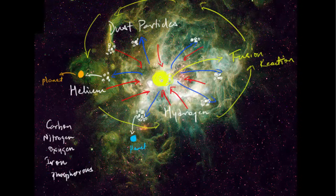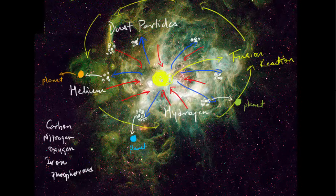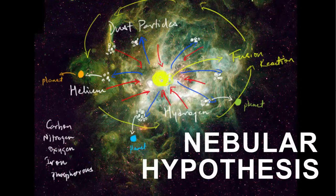Because now the heavier elements will come to the center and layer by layer planets started forming. So, this was the earlier theory of the origin of Earth, which is also known as the Nebula Hypothesis.